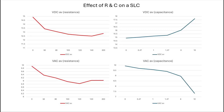Not everyone may have an oscilloscope at their disposal, so these charts will help visualize how resistance and capacitance can affect an SLC circuit when measured with a digital multimeter. These measurements were taken using the min-max feature of the meter, and what is displayed is the average measurement.